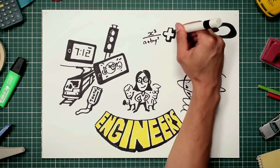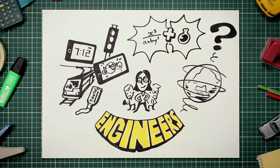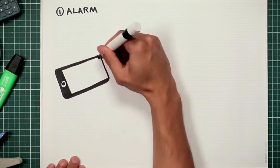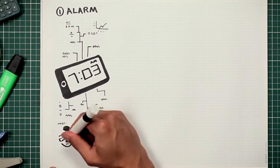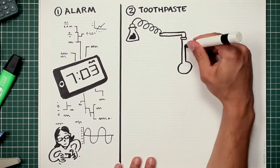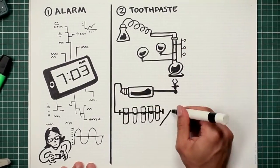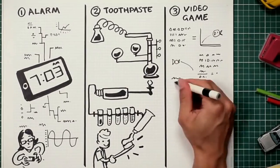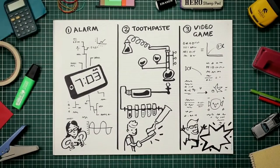Problems are an engineer's inspiration, and maths and science are the creative tools they use to solve them. Problems like making your alarm go off at the right time, or making sure your toothpaste has just the right balance of chemicals to give you that perfect smile, or even making a game so addictive it's almost impossible to put down, if that really is a problem.